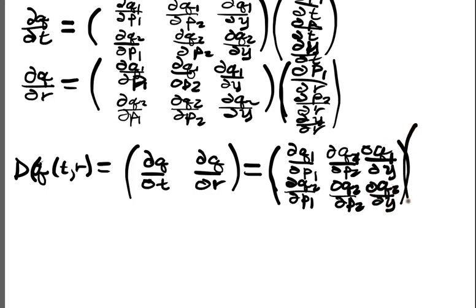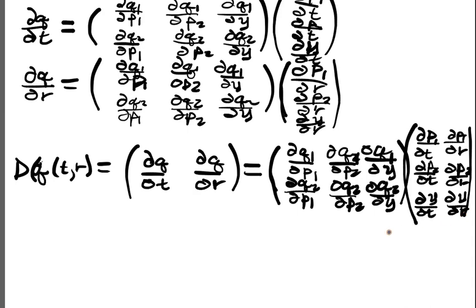And what does my Jacobian look like? Or what does this thing look like? Well, it looks like just the Jacobian of my economy vector, or my economy function. So I have (∂p1/∂t, ∂p1/∂r; ∂p2/∂t, ∂p2/∂r; ∂y/∂t, ∂y/∂r).